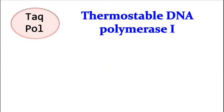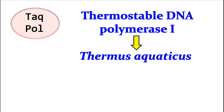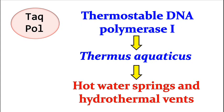Taq DNA polymerase is a thermostable DNA polymerase I isolated from Thermus aquaticus. Thermus aquaticus is usually found in hot water springs and hydrothermal vents.